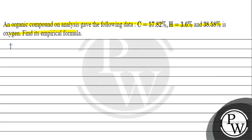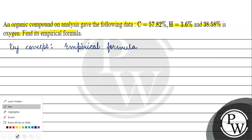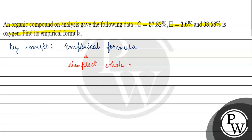The key concept for this question is empirical formula. Empirical formula is basically the simplest whole number ratio of atoms present in a compound.